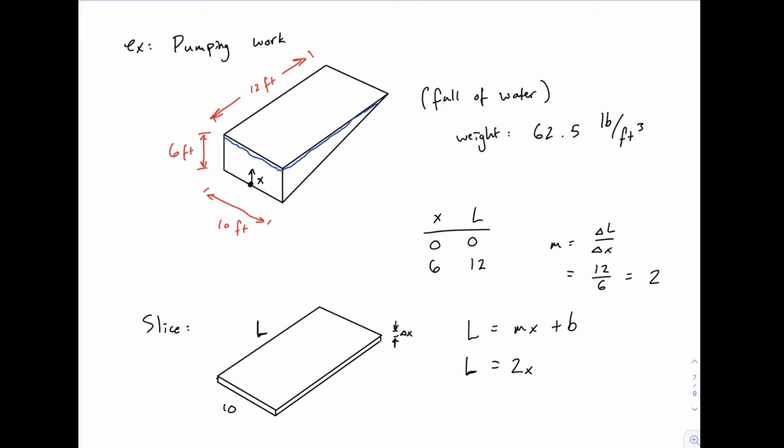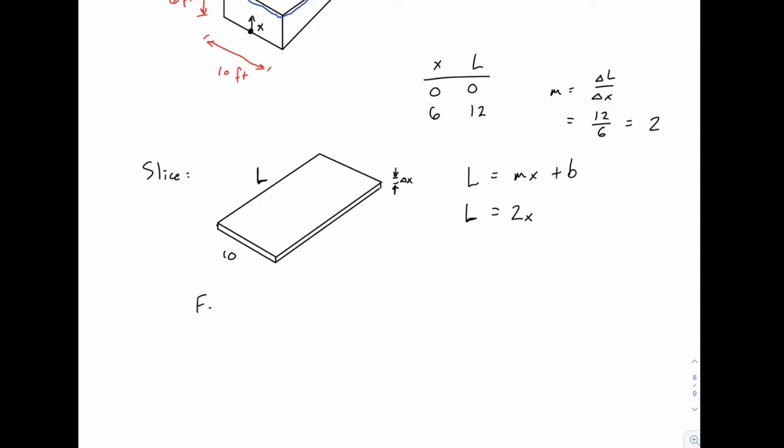Once we have that, we can take the same approach we've done before, where we find the weight of this one slice. The force is going to be 62.5, the unit weight times the volume. And then we can calculate the distance and combine them to find work. The volume of this rectangular solid is just like a box. It will be length times width times height.